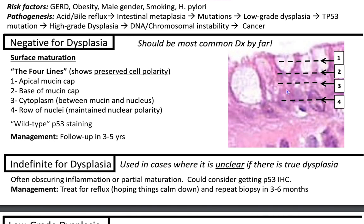Another sign to look for is surface maturation. If you do a p53 staining, it will be wild type in non-dysplastic tissue. The pattern of p53 is important to know across different organ systems. Wild type shows patchy staining. Mutated p53 patterns include null — where you have no staining at all — overexpressed, and cytoplasmic, because p53 is a nuclear stain.